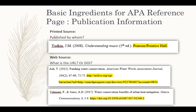The final major component of an APA reference entry is the publication information. If you are using a printed source, this will be the publishing company. If you are using a web source, it will be the URL. If your source has a DOI, or digital object identifier, then write the DOI as if it were a URL as shown in the example. Always use the DOI if a source has one.